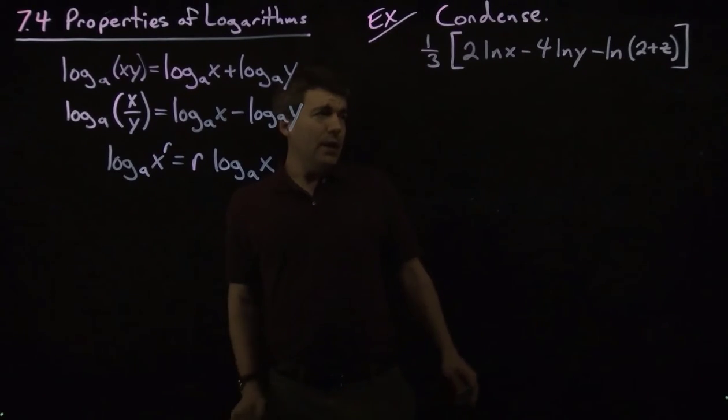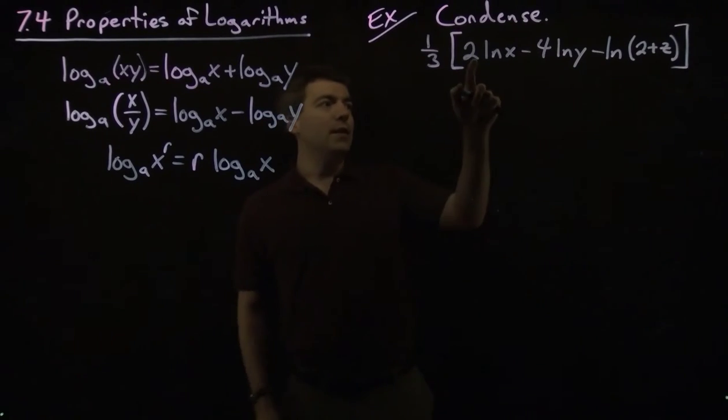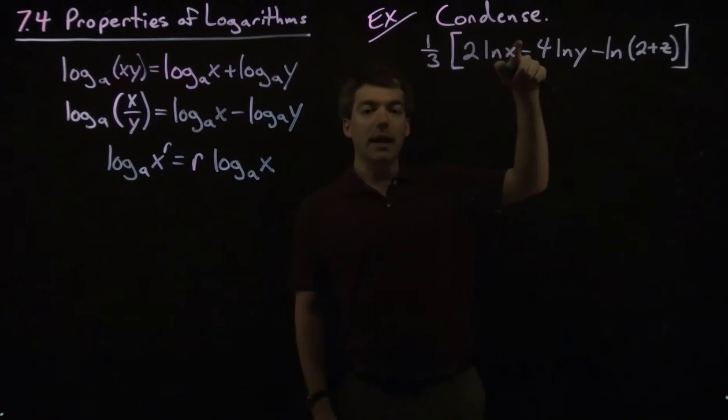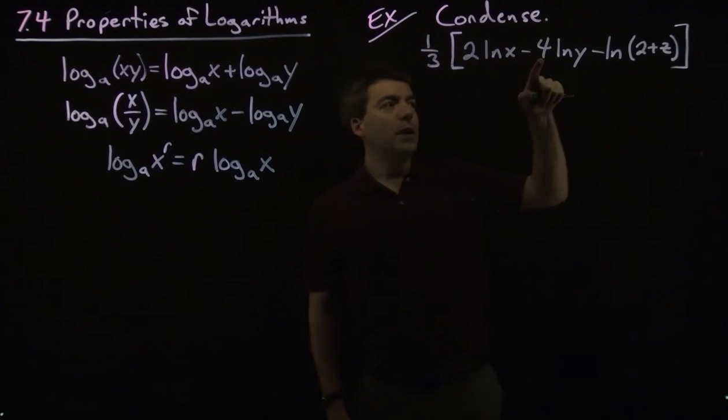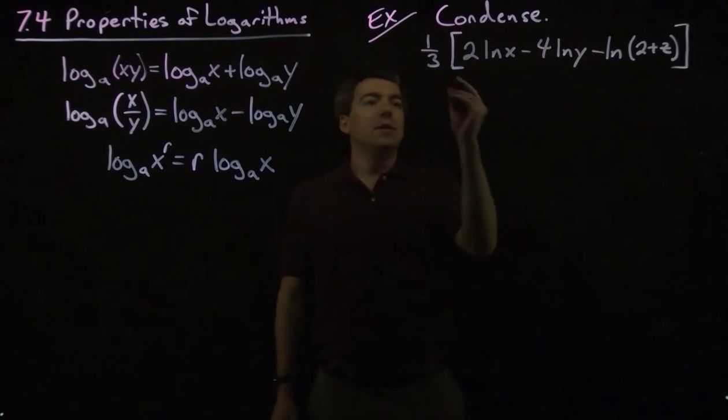Okay, so here we have 2 natural log of x. Using this property, we can take the 2 and put it as an exponent on x. The 4 here can be put as an exponent on y, and there's no coefficient here, so this is all fine. So let's do that.